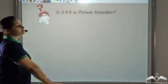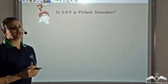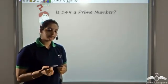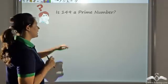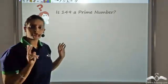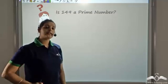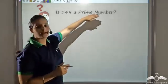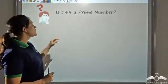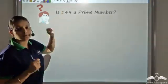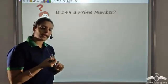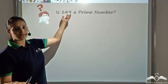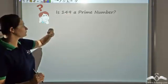Now, can you tell me whether 149 is a prime number or not? 149 will be a prime number if it has exactly two factors: 1 and 149. I know it has those two factors for sure. So if I can find one more number that divides 149, then it is not a prime number — it is a composite number. So I need to check whether 149 is divisible by some other number besides 1 and 149, using divisibility rules.